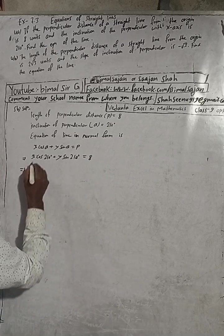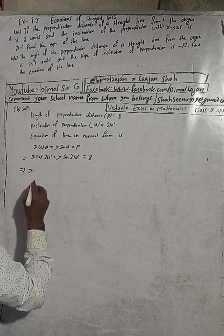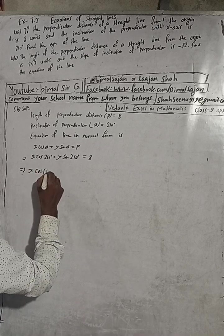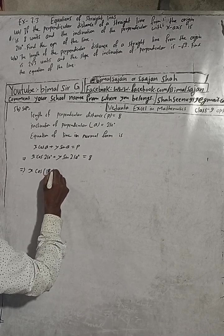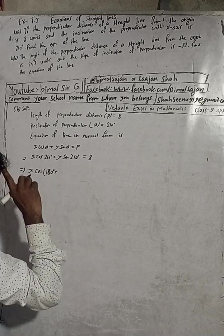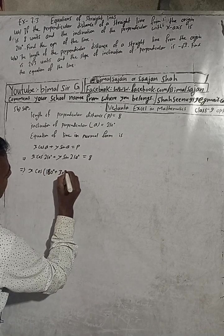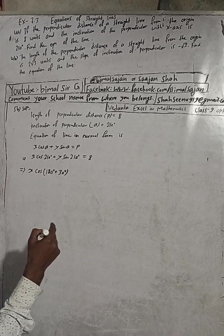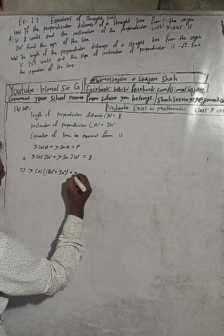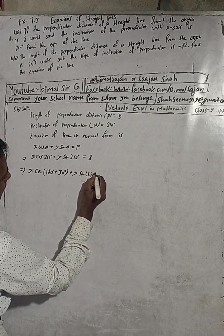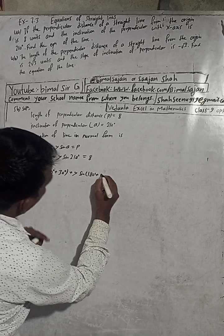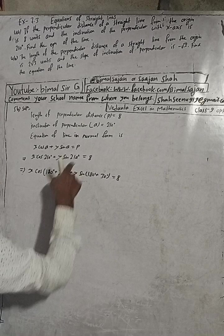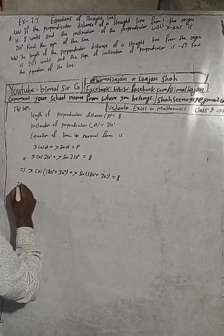Now we can write this as: x cos(180° + 30°) plus y sin(180° + 30°) is equal to 8. Note that 180 + 30 gives us 210 degrees again.